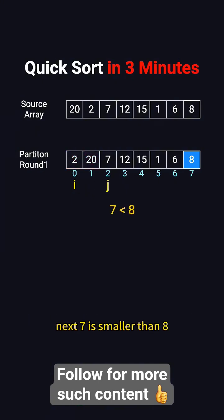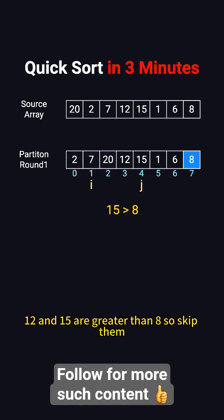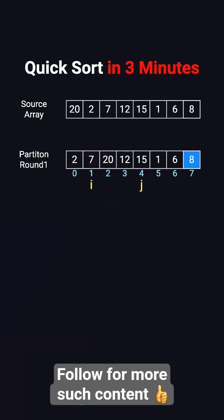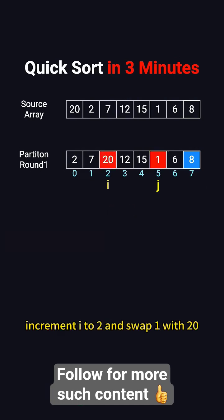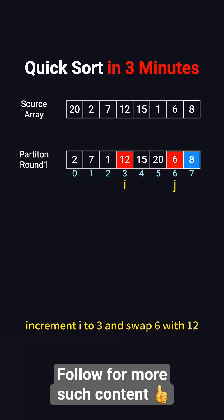Next, 7 is smaller than 8, so increment i to 1, and swap 7 with 20. 12 and 15 are greater than 8, so skip them. 1 is smaller than 8, increment i to 2, and swap 1 with 20. Finally, 6 is smaller than 8, increment i to 3, and swap 6 with 12.